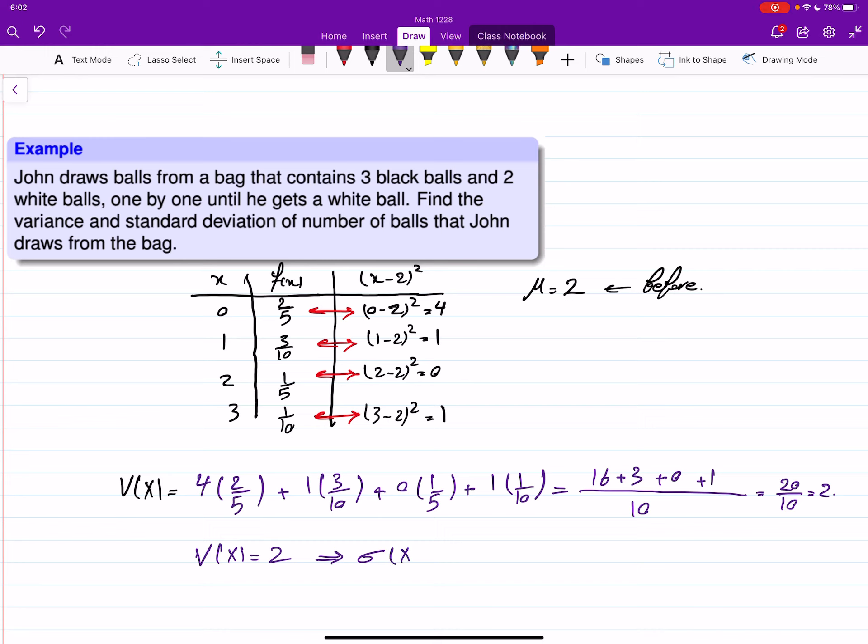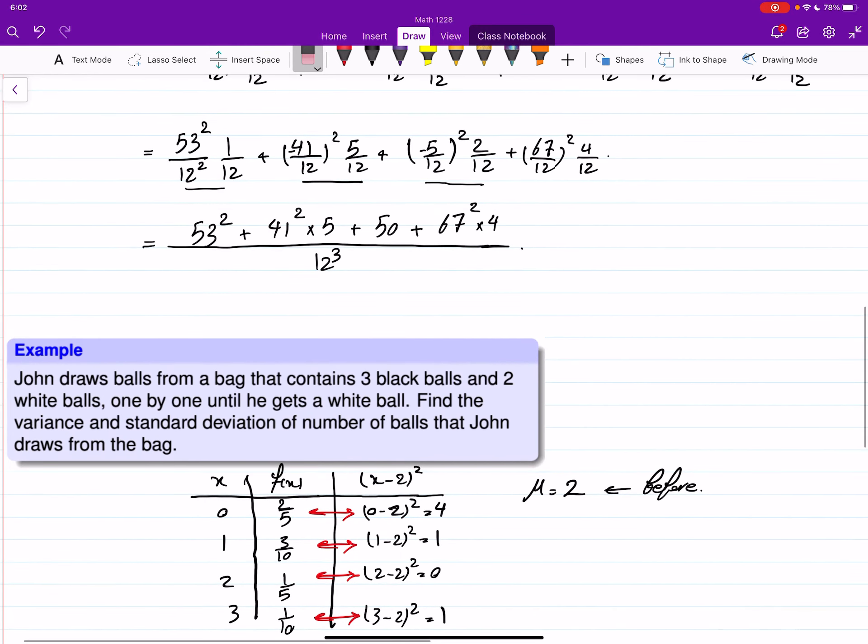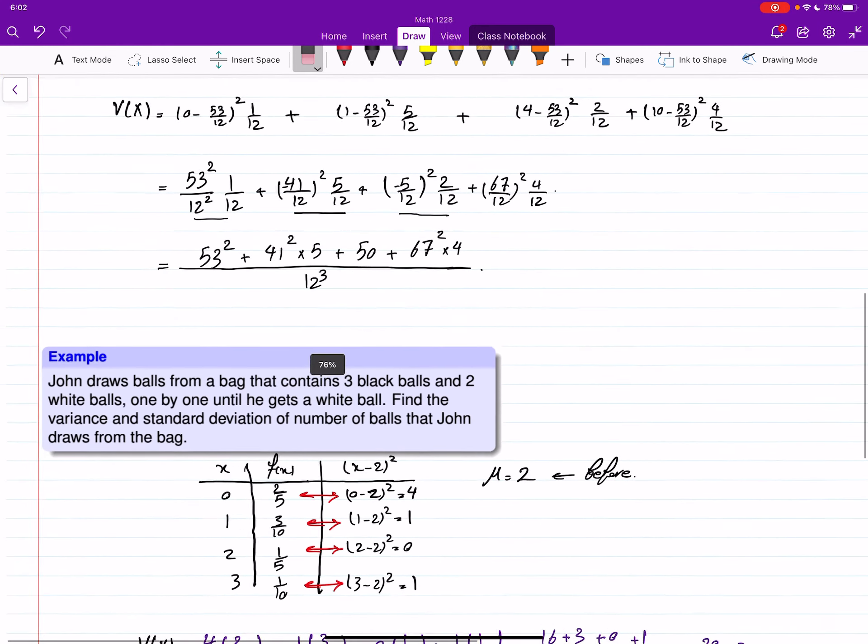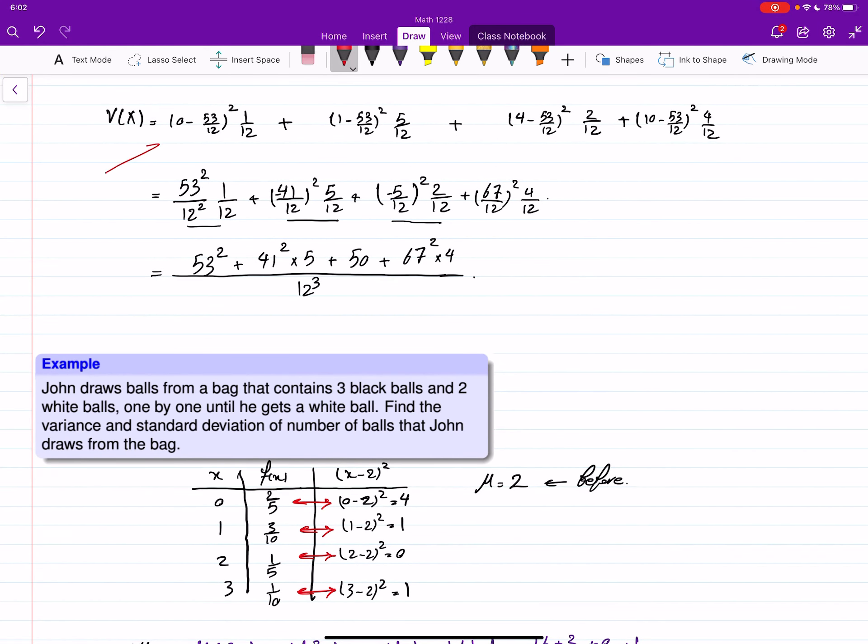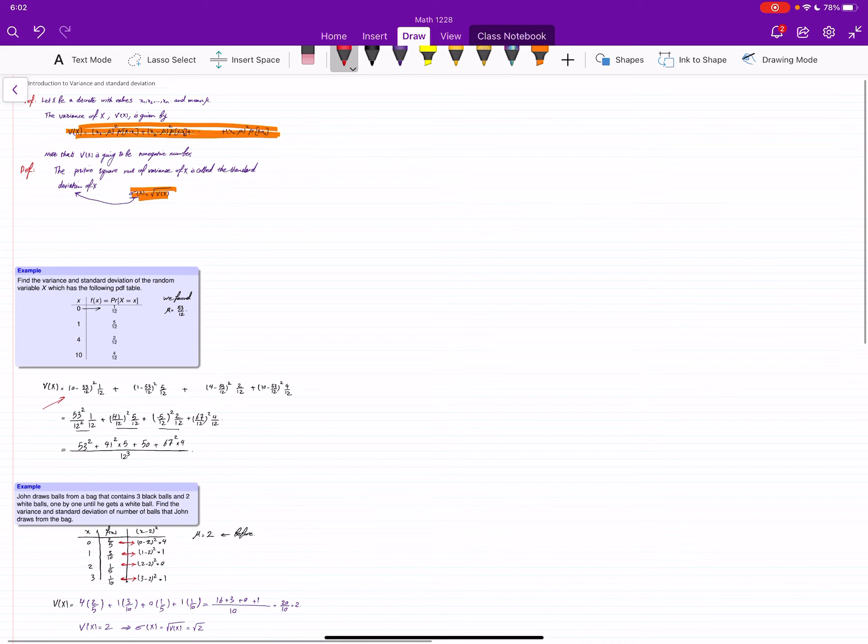Now if you're looking for the standard deviation, just take the square root of the variance, which is the square root of 2, and that's the number we are interested in. So you can either do it one by one as we did in that first example, or you can use the table and form another column for (x minus μ) squared, then multiply each value by the corresponding probability and add them. That's the variance, and we will learn more about the properties of variance later.